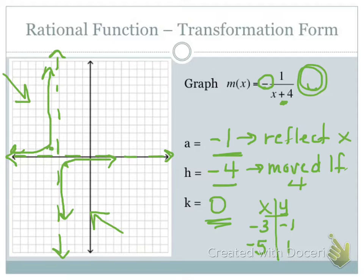Hopefully that looks familiar in terms of using a, h, and k for transformations — we're just applying those transformations to the parent rational function graph. If you have any questions about transformation form, make sure to ask them next class. Next class we'll take this further and talk about other kinds of rationals that don't quite fit transformation form but are still functions we should be able to graph.